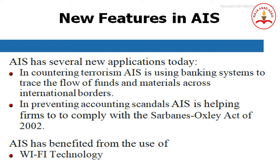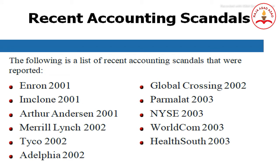New features of the accounting information system include countering terrorism — using banking systems to trace the flow of funds and materials across international borders. AIS also helps firms comply with the Sarbanes-Oxley Act of 2002, and has benefited from Wi-Fi technology. Recent accounting scandals traced with the help of AIS include Enron (2001), Imclone (2001), Arthur Andersen (2001), Merck (2002), and Tyco (2002), among others.